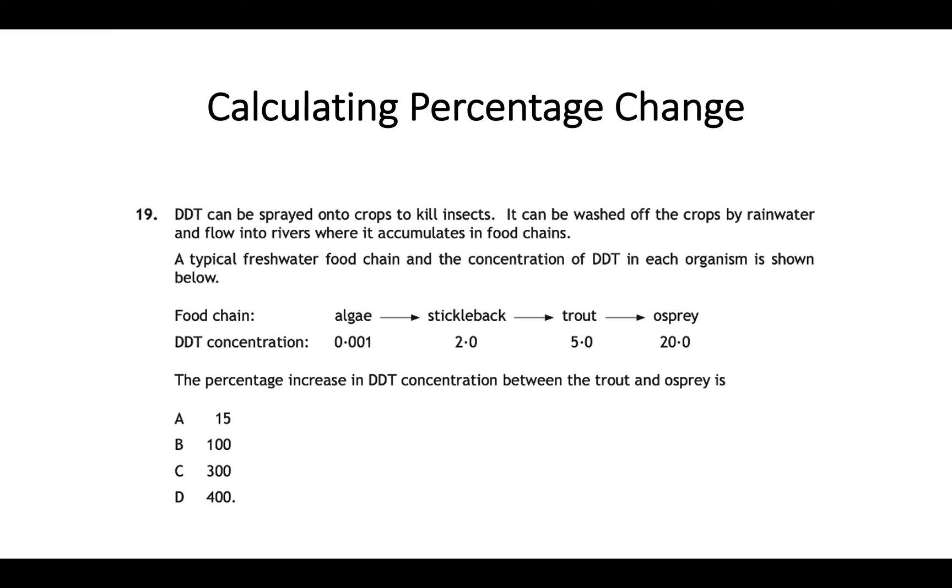Okay so hopefully you've given this a go and we have a look at this. So again as always we are finding the difference. That's the key thing in these questions. So the difference between the final value of 20 and the original value of 5 would be 15. So 15 is our difference.